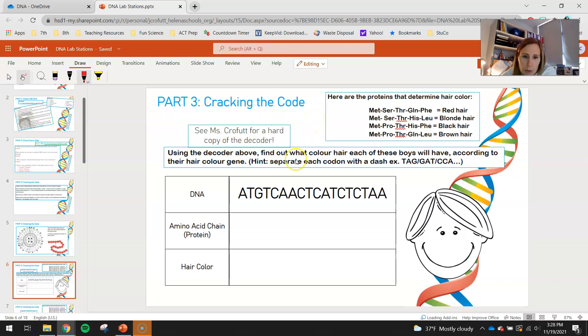What you guys will do is you will break these up into threes. These are the codons you guys will be using to figure out the color of this little gentleman's hair right here. Using the decoder above, find out what color each hair of these boys will have according to their hair color gene. Separate each codon with a dash. So the first one you guys would see is A, T, G.